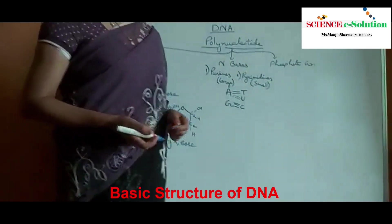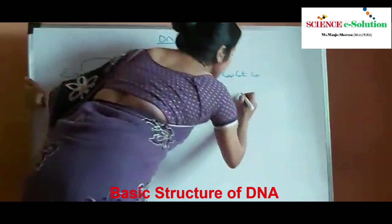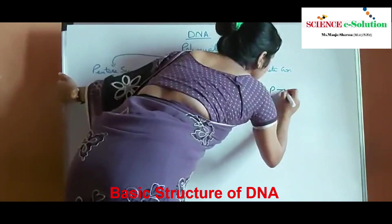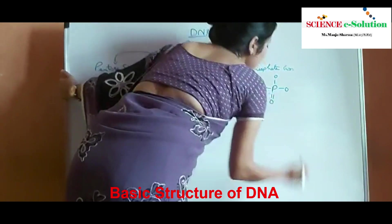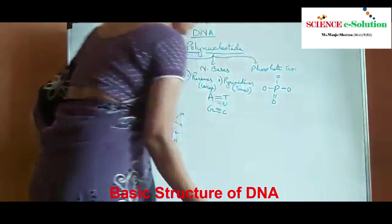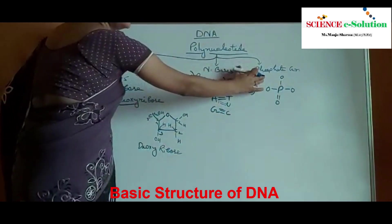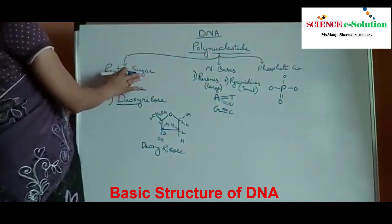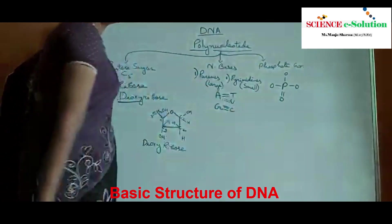Now let us see the structure of a phosphate group. The phosphate group is a phosphoric acid where negatively charged oxygen atoms are present. So these are the three components present in a nucleotide: a pentose sugar, a nitrogenous base, and a phosphate molecule.